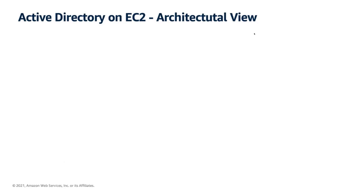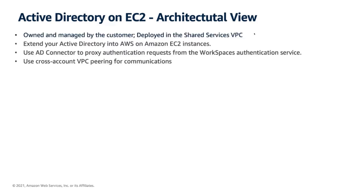Now let's consider another scenario: you want to use Amazon Workspaces but you want to manage your own Active Directory by yourself on AWS. Can you still integrate Amazon Workspaces with AD? Yes, of course. In this case, you are responsible for deploying and managing your Active Directory. You can think of this option as somewhat like extending your directory to the AWS Cloud, and it's usually deployed in a shared VPC so that it can be used as an identity domain for using other AWS services.